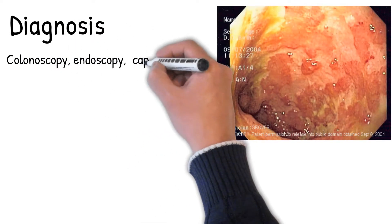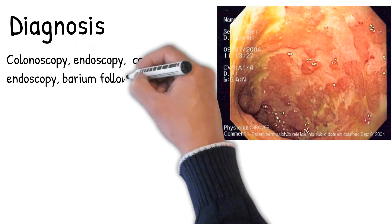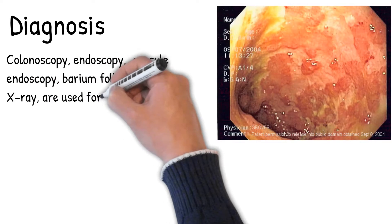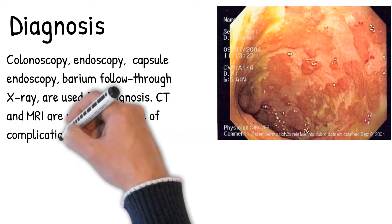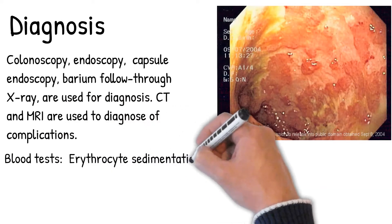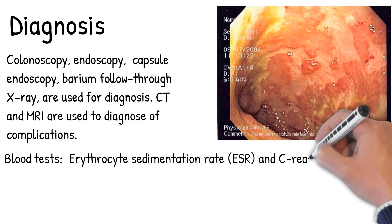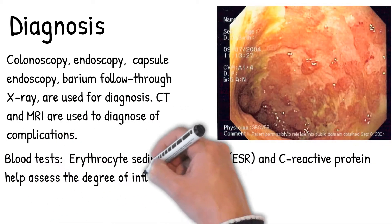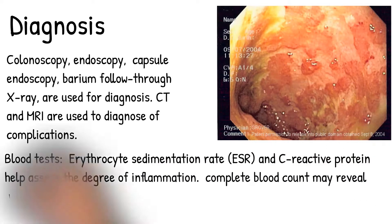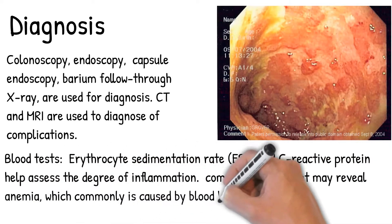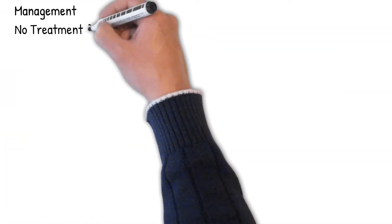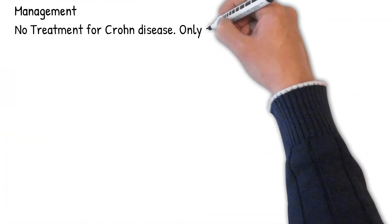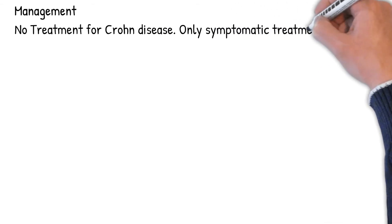Diagnosis involves colonoscopy, endoscopy, capsule endoscopy, and barium follow-through X-ray. CT and MRI are used to diagnose complications. Blood tests including erythrocyte sedimentation rate (ESR) and C-reactive protein help assess the degree of inflammation. A complete blood count may reveal anemia, commonly caused by blood loss leading to iron deficiency or by vitamin B12 deficiency. Serosal adhesions from bowel to bowel can also cause obstruction.